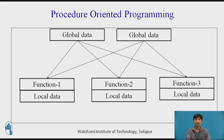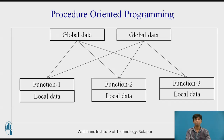This is because functions are action-oriented and do not really correspond to the elements of the problem. Key features of procedure-oriented programming: emphasis is on doing things — algorithms are written; large programs are divided into smaller programs known as functions; most functions share global data; data moves openly around the system from function to function; functions transform data from one form to another; and it employs a top-down approach in program design.